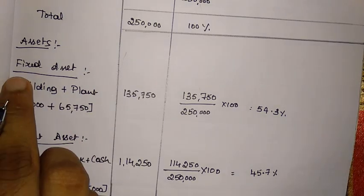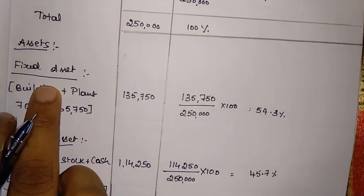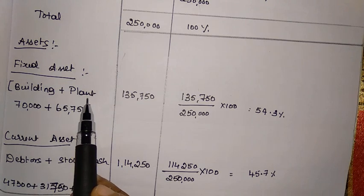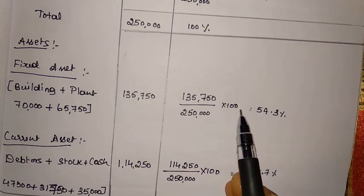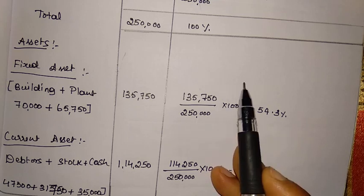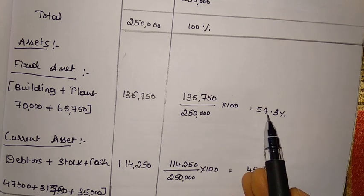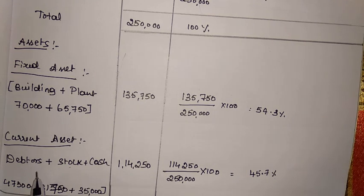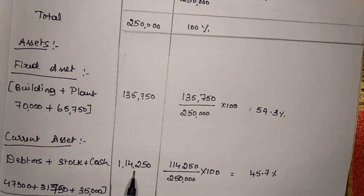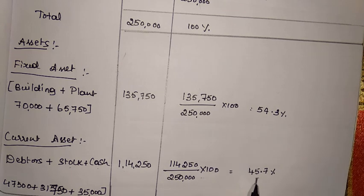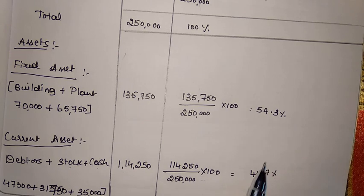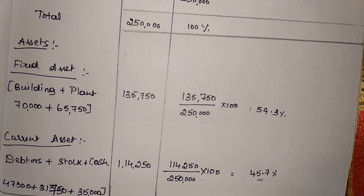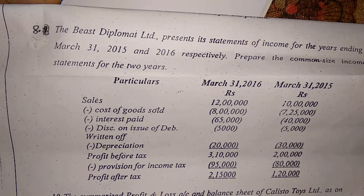On the assets side, the first component is fixed assets: building and plant together are 1 lakh 35,750, which gives 54.3% of total assets. Then current assets — there are three: debtors, stock, and cash. Total current assets are 1 lakh 14,250, giving 45.7% of total assets. Total assets is 2 lakh 50,000 and the percentage is 100%.